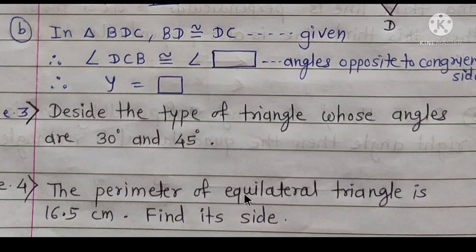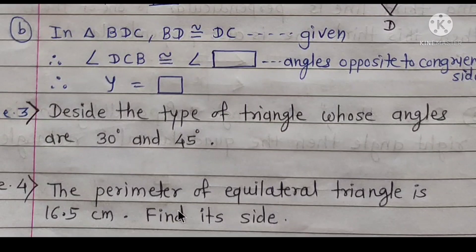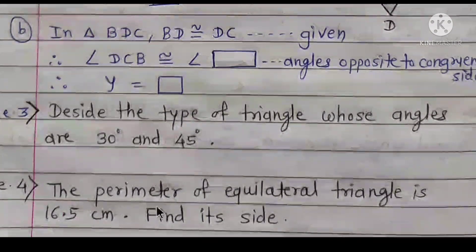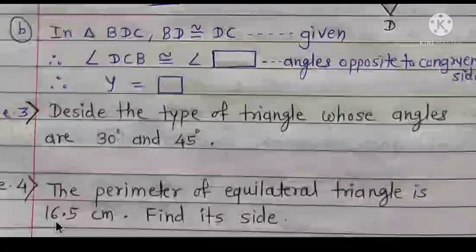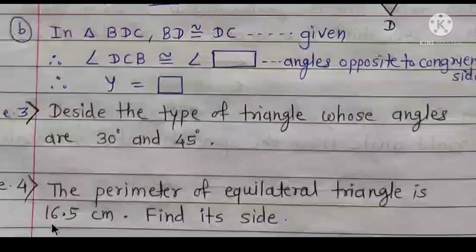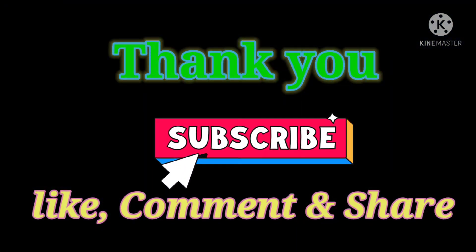Question 4: The perimeter of an equilateral triangle is 16.5 cm. Find its side. Since all sides of an equilateral triangle are equal, the perimeter equals 3 times the side. Therefore, side equals perimeter divided by 3, which is 16.5 divided by 3, giving each side equal to 5.5 cm.